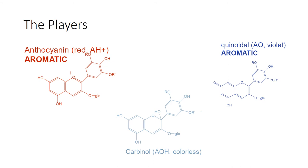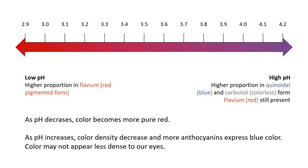On a scale from 2.9 to 4.2: at low pH, a higher proportion of anthocyanins are in the flavylium form, which is the bright red one. As pH increases, a higher proportion goes into the quinoidal or blue form, and a higher proportion are also in the colorless carbonyl form. As pH decreases, the color becomes a more pure red. As pH increases, color density actually decreases and more anthocyanins express a blue color — though it may not appear that way to our eyes. You've probably had high-pH Syrahs that look very dark despite a higher proportion being in the colorless form.